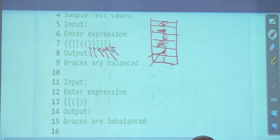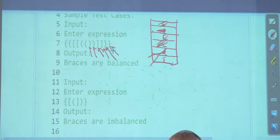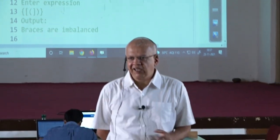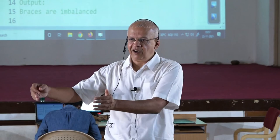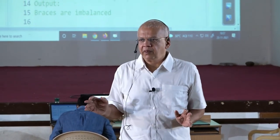If you reach the end of the string and the stack is not empty, that means you have extra opening brackets somewhere with no closers for them — so they are not balanced. At the end of the string, if everything is balanced, the stack should be empty. The closers should have knocked out the openers.